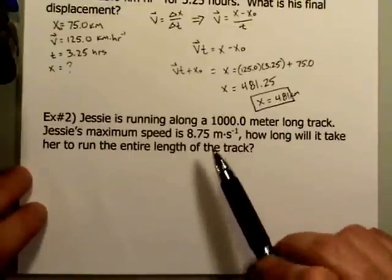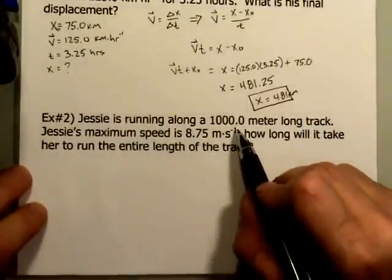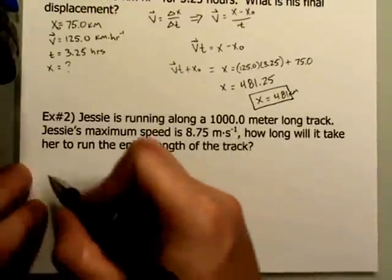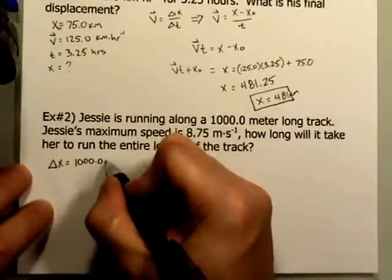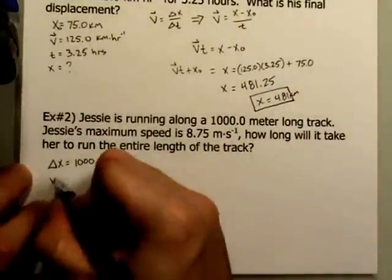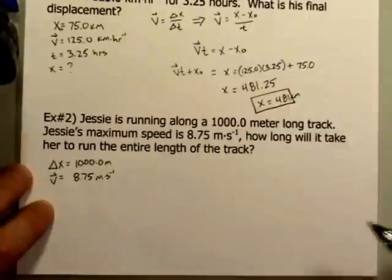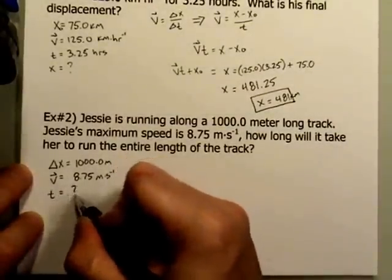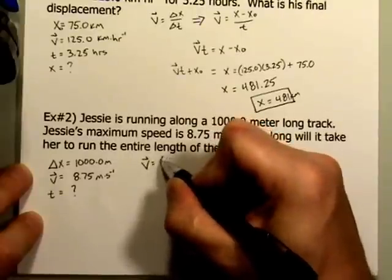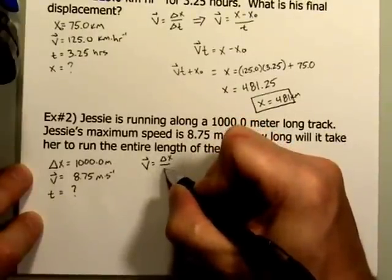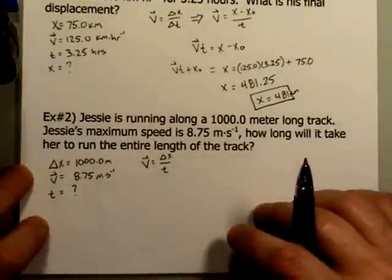Just like we did in the last one, we want to identify the values. I was never told where the initial displacement was, so it would be assumed that her initial displacement is 0. Delta-X equals 1,000 meters. The maximum speed is 8.75 meters per second. The question is how long will it take for her to run? Just like in the last example, you always want to write the equation without solving for anything, so that you can convey to anybody looking, for example at an exam, that you know the right formula.